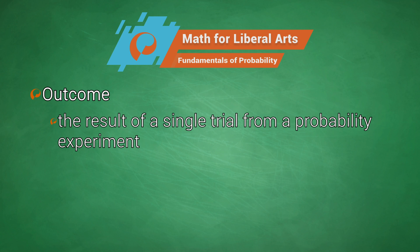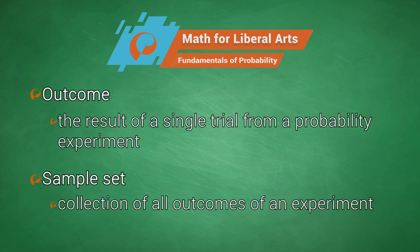An outcome is the result of a single trial from a probability experiment. The collection of all outcomes of an experiment is a set called the sample set.